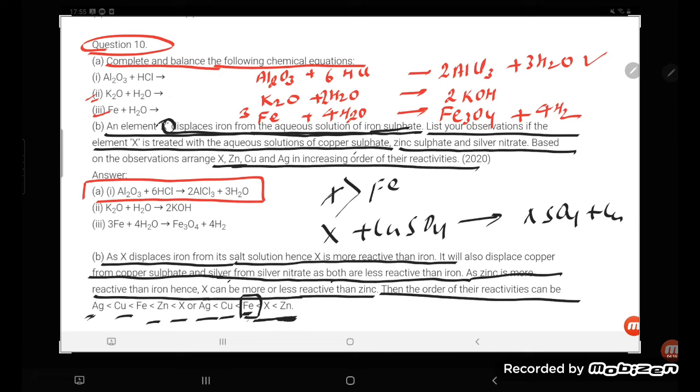Then the order of their reactivity: last one is Ag, then Cu, Fe, Zn, and X. So this is what the order. Or the second condition can be Ag, Cu, Fe is fixed, then either X can be more reactive than zinc or zinc can be more reactive than X. So both are possible. Okay, so this is our required answer, student. Thank you so much for watching.